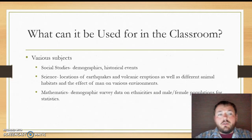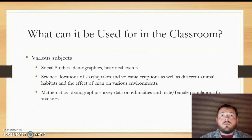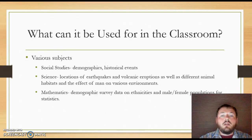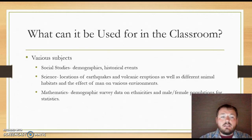What can GPS and GIS be used for in the classroom? It can be used for pretty much anything — it's very diverse. In social studies, you have demographics and can visit historical events. In science, it's very useful for looking at locations of earthquakes and volcanic eruptions, as well as different animal habitats and the effect of humans on various environments — for example, examining the effects of logging in South America. It's also useful when teaching the theory of evolution and Darwinism, virtually taking students to the Galapagos Islands. In mathematics, demographic survey data on ethnicities and male and female populations is mainly useful for statistics.